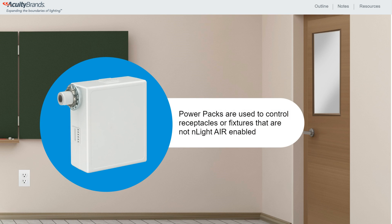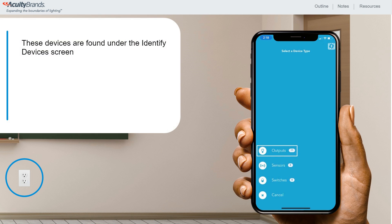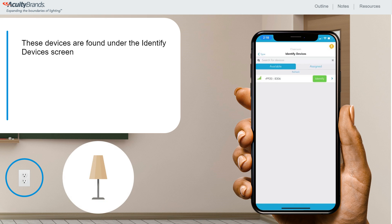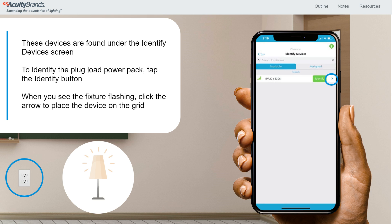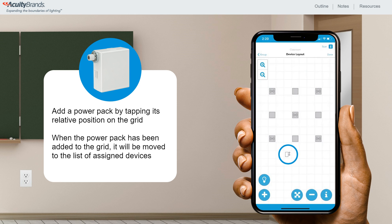For classrooms, several national energy codes require 50% of all receptacles be automatically turned off by an occupancy sensor within 20 minutes of all occupants leaving the space. In Enlight Air, power packs, or RPP20s, are used to control both receptacles and other light fixtures that aren't already Enlight Air enabled. Similar to enabled fixtures, they can be found under the outputs on the Identify Devices screen. You'll want to plug in a temporary light source into a controlled receptacle to test. To identify the power pack, tap the Identify button and watch the temporary light plugged into the receptacle. Once you see the fixture flashing, click the blue arrow to the right to place the device on the grid. To add the power pack to the grid, tap its relative position — place the device where it is actually installed above the ceiling, not where the device it's controlling resides. Once the power pack has been added to the grid, it will no longer appear in the list of available devices; it will be added to the list of assigned devices.